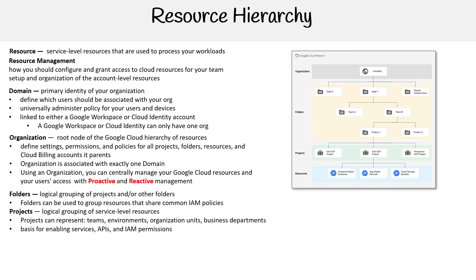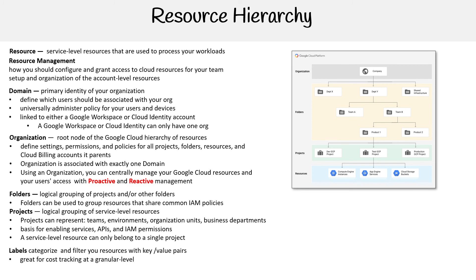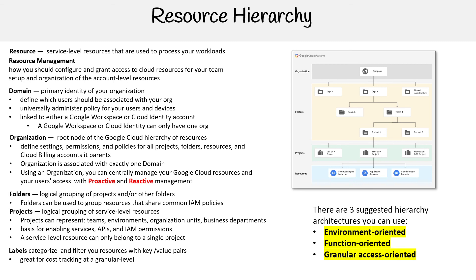Projects are the basis of enabling services, APIs, and IAM permissions. A service-level resource can only belong to a single project. You also have labels — categorize and filter your resources with key-value pairs. If you used AWS or Azure, they call these tags, but here in GCP they call them labels. They're great for cost tracking at a granular level. There are three suggested hierarchy architectures you can use: environment-oriented, function-oriented, and granular access-oriented. They won't ask you to name which architecture it is, but they'll describe a setup and ask which would be a good fit — that's why you want to know these three types. We'll go over to the docs to look at that, because that's where the most detail is.